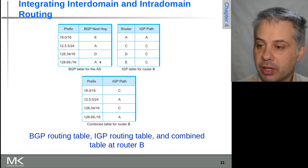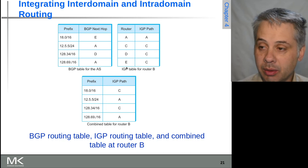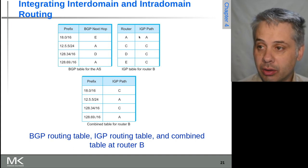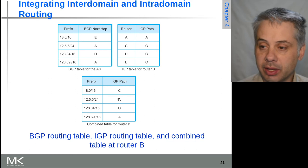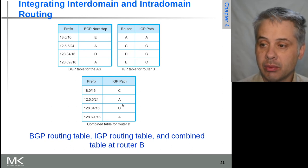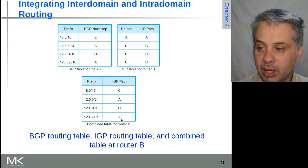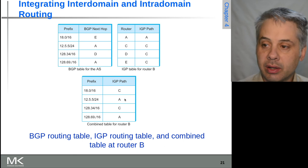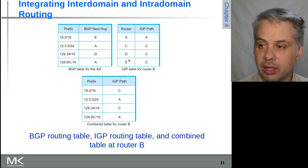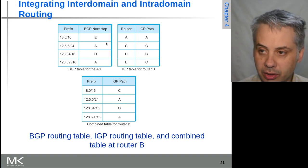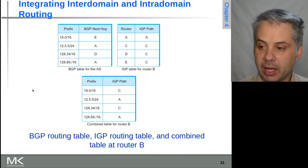Combining these two together: router B can work out that to get to 18.0/16 it needs to go via C, because it wants to get to E but reaches E via C. For 12.5.5/24 it goes via A directly. For 128.34/16 it goes via D, which is reached via C. For 128.69/16 it also goes via A. So the actual routing table for router B combines knowledge of the internal network and the external network as to where the ASes can be found.